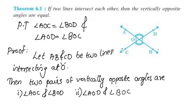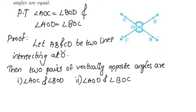Now we have two pairs of vertically opposite angles. We will prove that angle AOC is equal to angle BOD. Now we will write AB and CD.